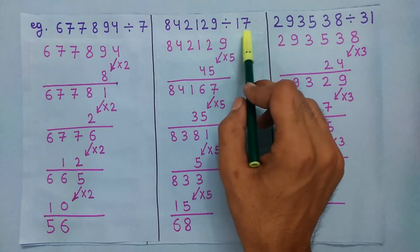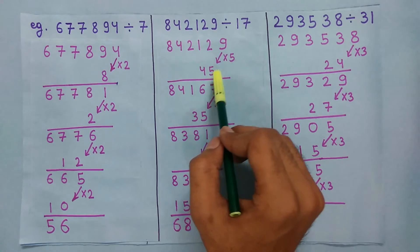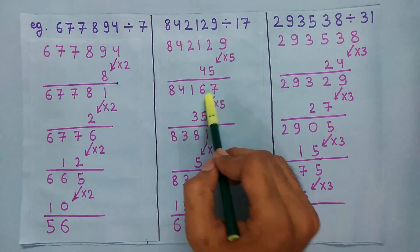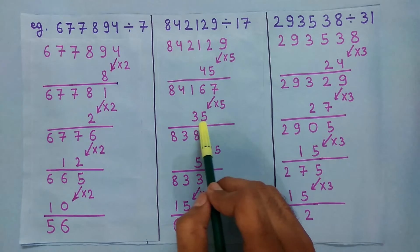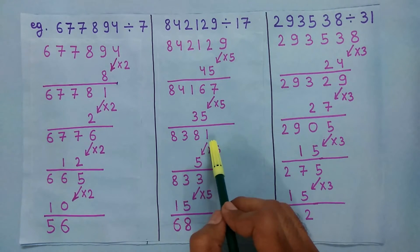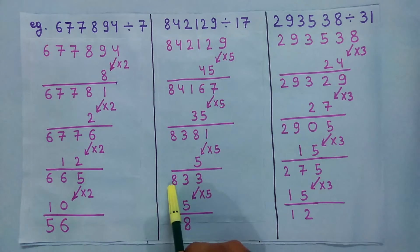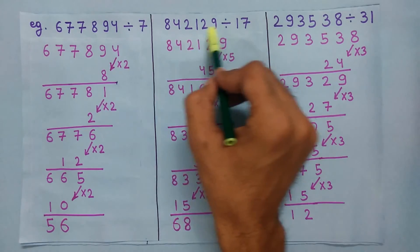To check if this number is divisible by 17 or not, multiply the last digit by 5 and we get 45. Now subtract this 45 from the remaining number and we get this number. This number is again large, so we repeat the process. Multiply the last digit by 5 and we get 35. Subtract this 35 from the remaining number and we get this number. Again multiply the last digit by 5 and we get 15. Subtract this 15 from the remaining number and we get 68. Now 68 is divisible by 17, so this number is also divisible by 17.